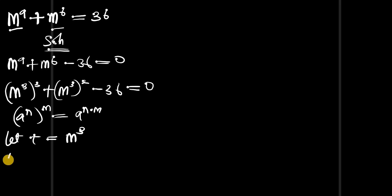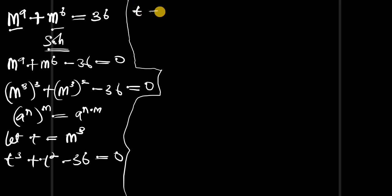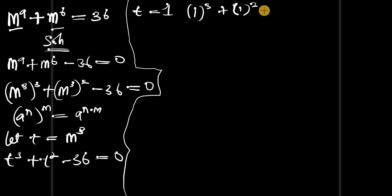That means you're going to have t power 3 plus t power 2 minus 36 equals to zero. So how do we solve this polynomial equation? We can make use of this particular trick — let's test for the value of t that will satisfy this equation. Starting with t equals to 1: 1 power 3 plus 1 power 2 minus 36 — this is not equal to zero.